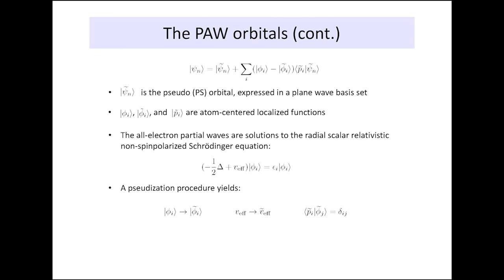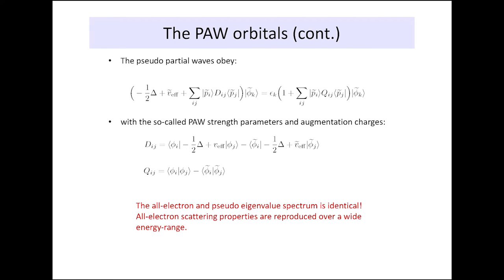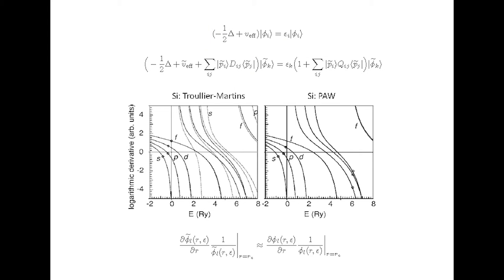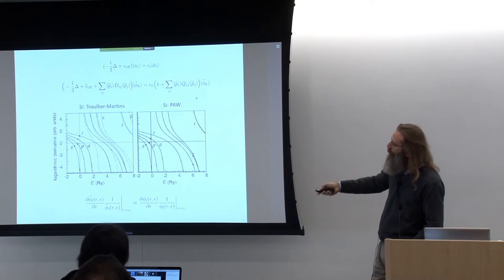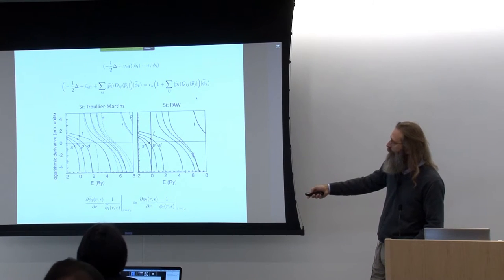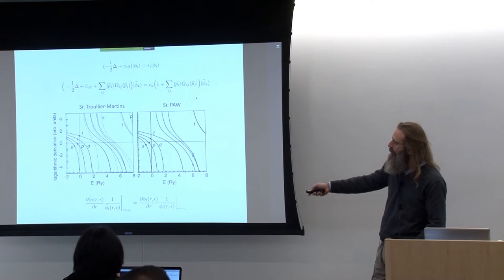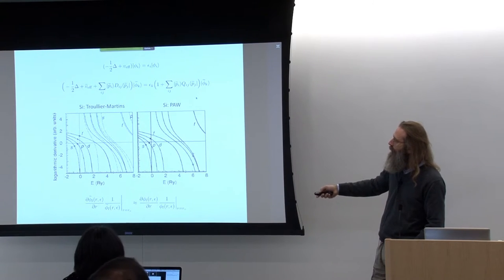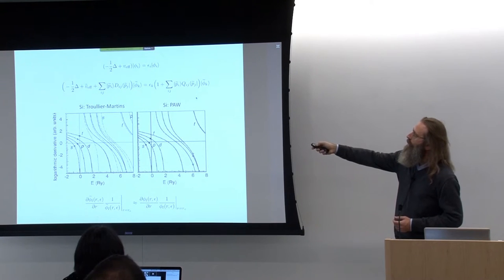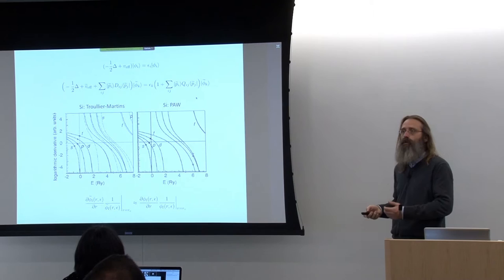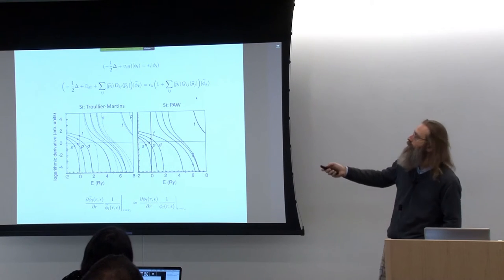In terms of electronic scattering, one usually represents that in the following way. These equations should have an identical eigenvalue spectrum. In scattering theory, we look at what is called the logarithmic derivative. These quantities should be essentially the same over a whole range of energies, and then we have generated a good pseudopotential.